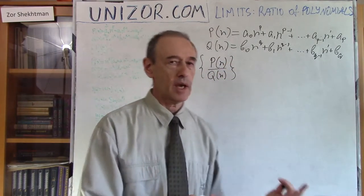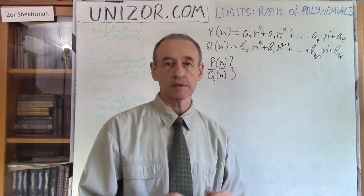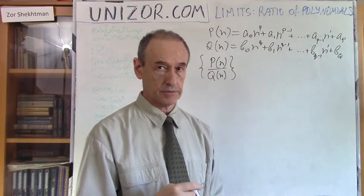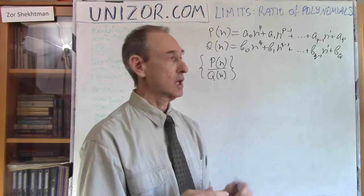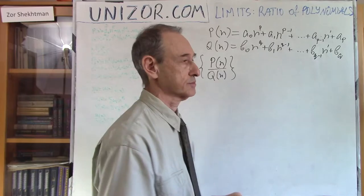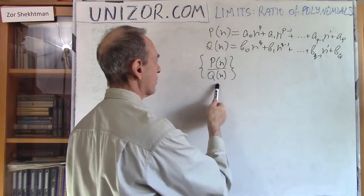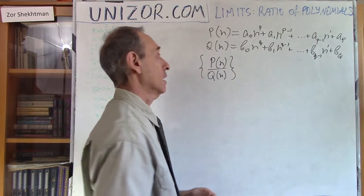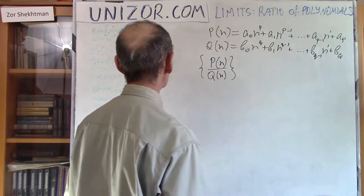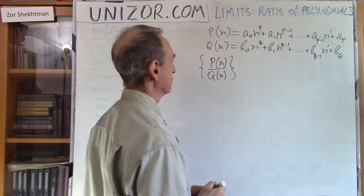In the previous lecture where I was talking about indeterminate forms of limits, I did use a couple of polynomials as examples. So how can we approach this? It's quite simple. Here is what I'm proposing to do.